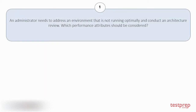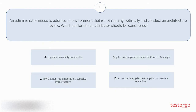Question number 1: an administrator needs to address an environment that is not running optimally and conduct an architecture review. Which performance attributes should be considered? Your options are: A. Capacity, Scalability, Availability.